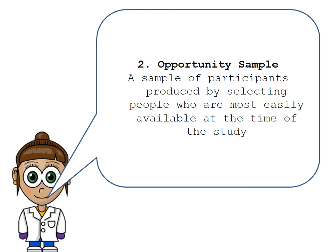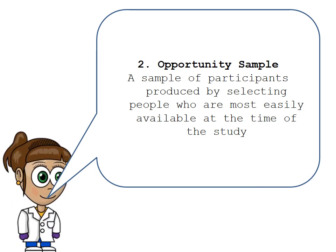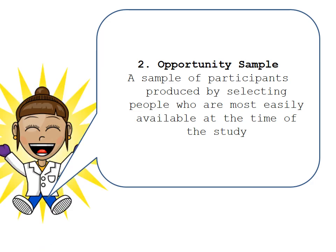The second type of sampling is opportunity sampling. This is when a sample is produced by selecting people who are most easily available at the time of the study. For example, if you were doing an experiment at school, an opportunity sample might be to go to the common room and pick whoever's there at that time.